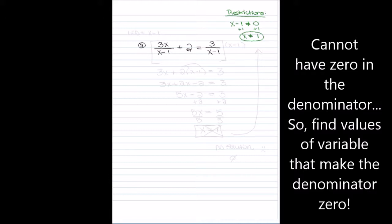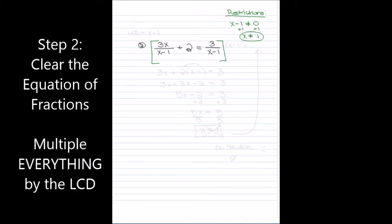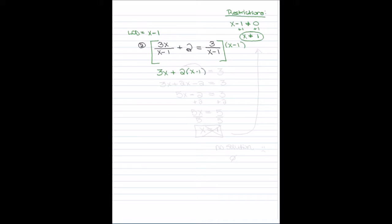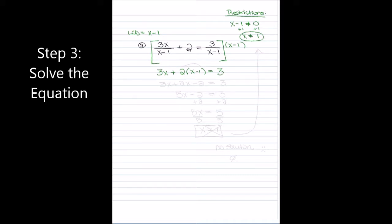The next step is to get rid of the fractions, and the way we do that is by multiplying by the LCD. The LCD in this case is going to be x minus one. So I make a big bracket around the entire equation and multiply everything by x minus one. The first term gives me 3x, the next term gives me 2 times (x minus one), and the last term gives me 3.